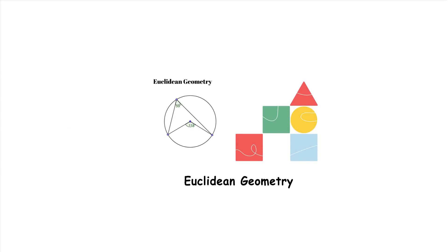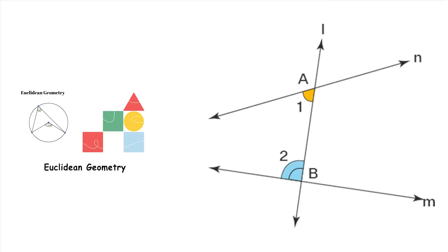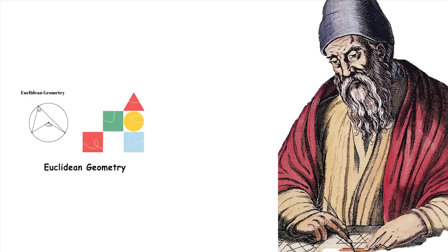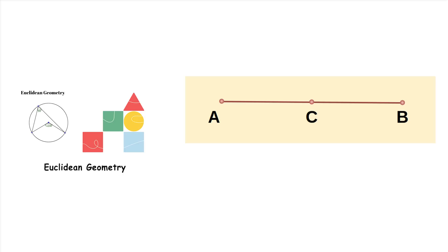Euclidean geometry. Euclidean geometry is the study of plain and solid figures based on axioms and theorems formulated by the ancient Greek mathematician Euclid. It deals with properties and relationships of points, lines, surfaces, and shapes in a flat, two-dimensional plane or three-dimensional space.